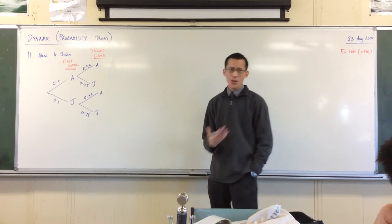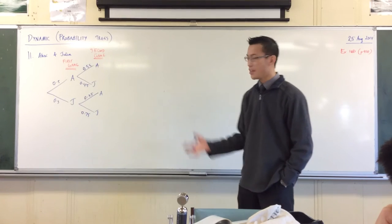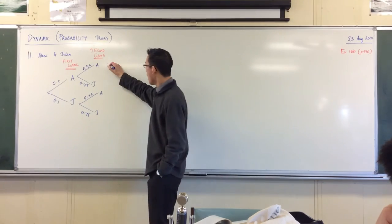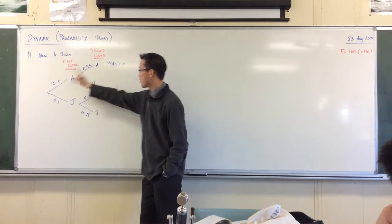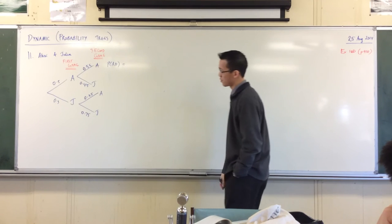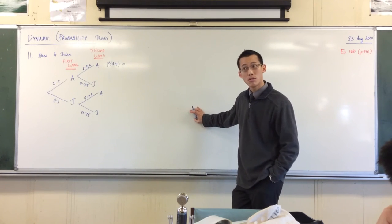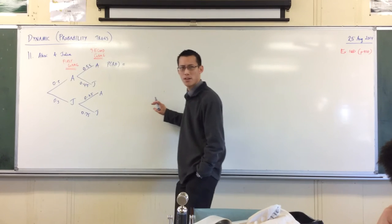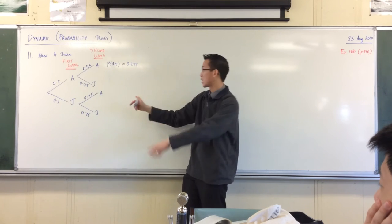So now from here, even though they don't ask you to do this, but it's going to be useful to us in a second anyway. There are only four alternatives. I can say the probability of Alex winning both games is going to be 0.5 times 0.55, which I do not know off the top of my head. I'm guessing it's 0.275. There we go. Which we get by the product rule. We're just multiplying that across.